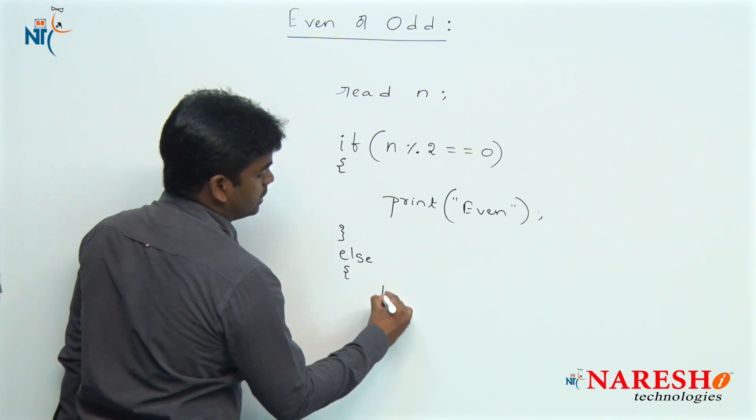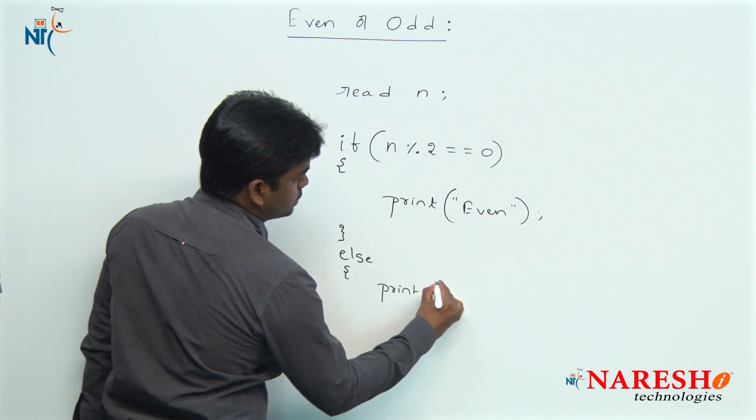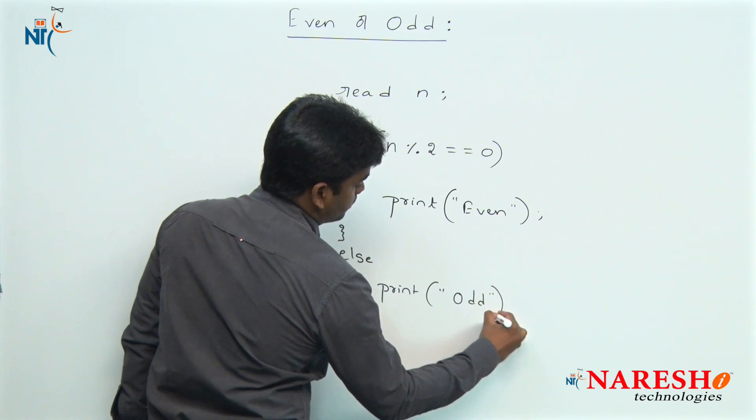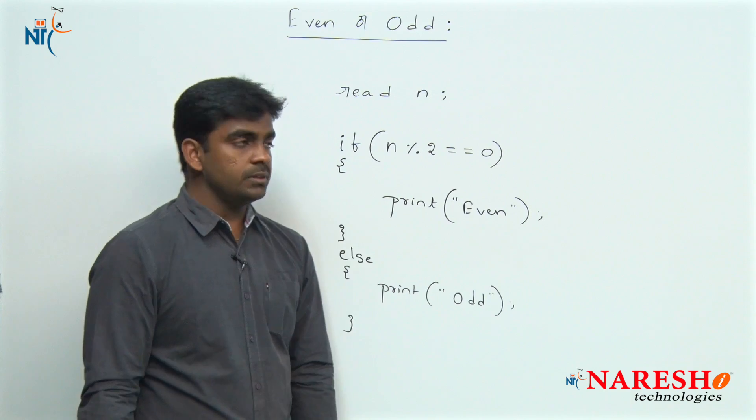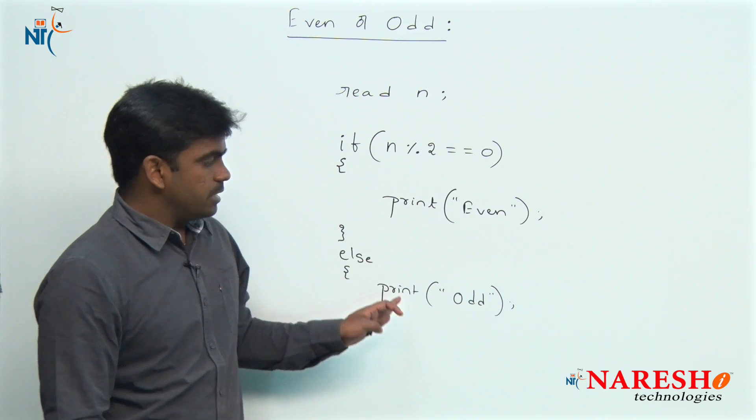In any programming language, the logic is the same logic. This flow is also important. For this simple logic, if they ask to write the flow, how to write the flow?